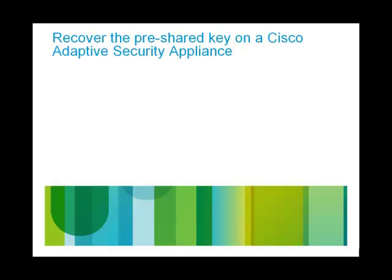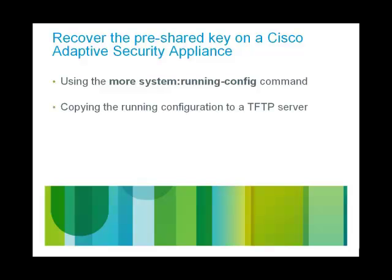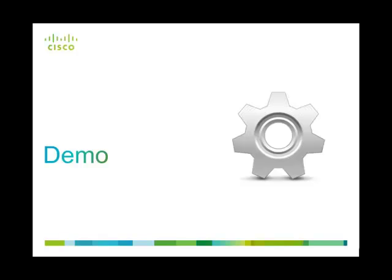Now let's look at the different methods through which we can recover the pre-shared key on the Cisco ASA Security Appliance. The first method is by using the more system running config command in CLI. The second method is by copying the running configuration to a TFTP server. Once copied, the file can be viewed using Wordpad, which will show the pre-shared key in clear text format. The third method is by copying the running configuration to an FTP server.